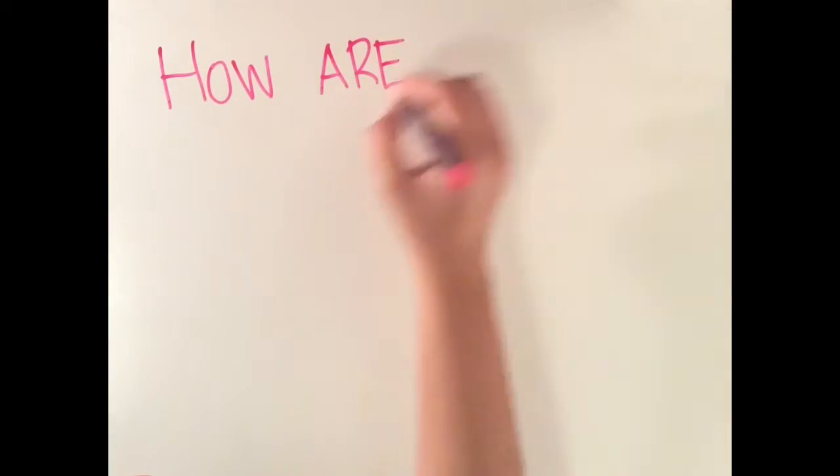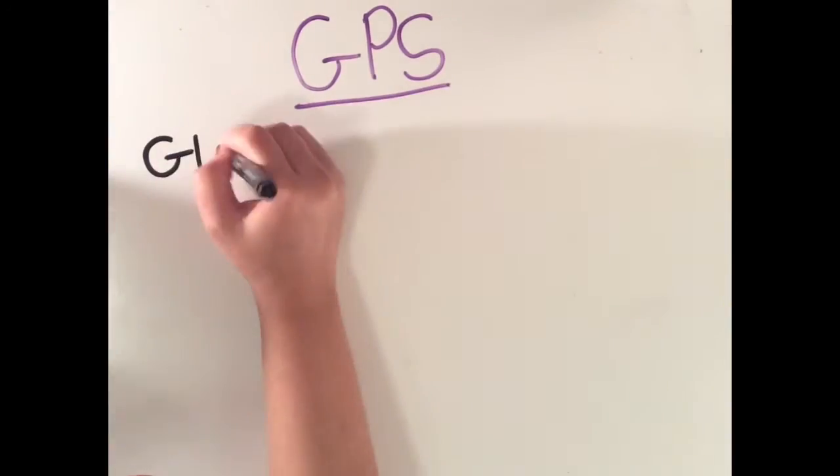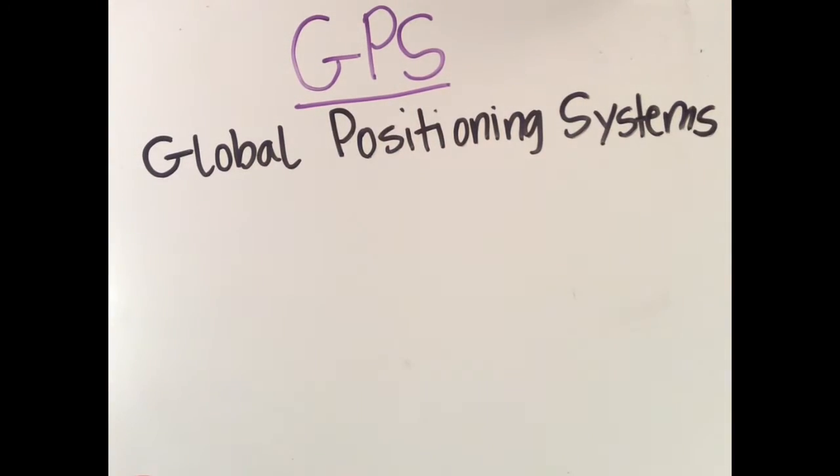What is the best way to measure latitude and longitude? GPS, or Global Positioning Systems, are the most common and effective way to gather data on location.